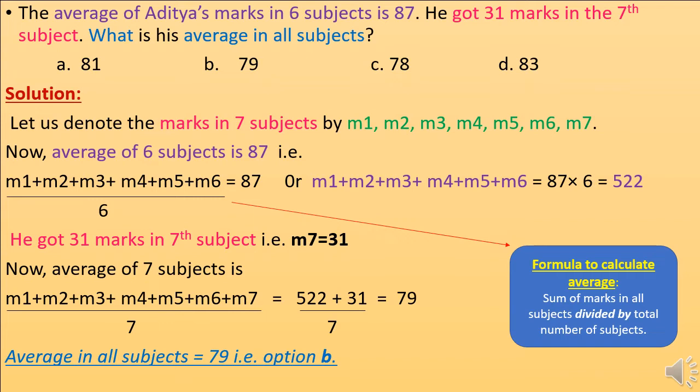That is, (M1 + M2 + M3 + M4 + M5 + M6) divided by 6 equals 87. This is the formula to calculate average: sum of marks in all subjects divided by total number of subjects. So M1 + M2 + M3 + M4 + M5 + M6 equals 87 × 6, which equals 522.